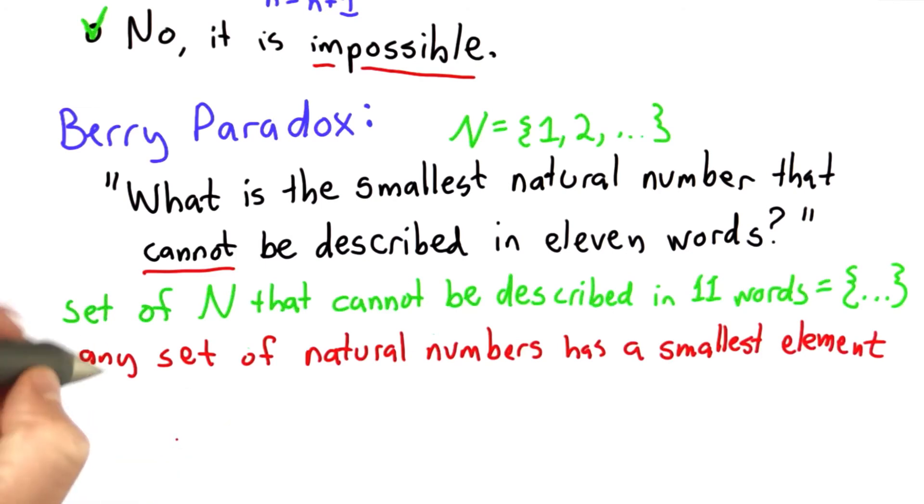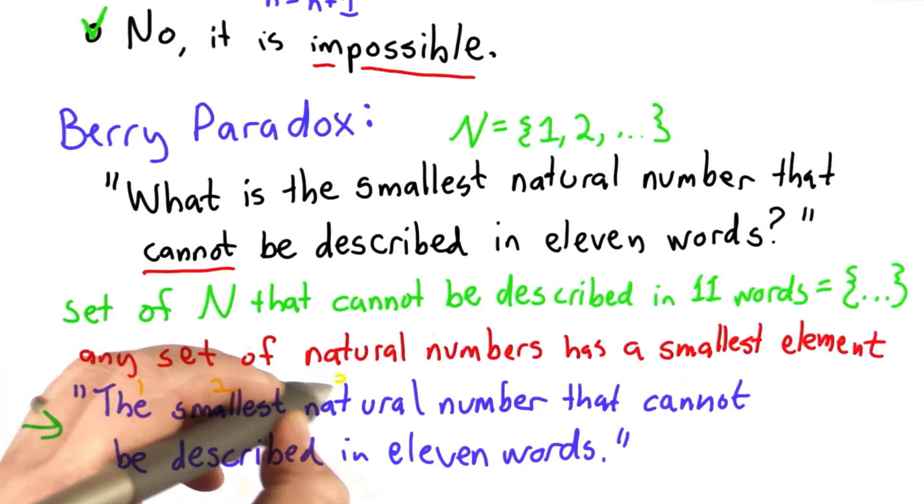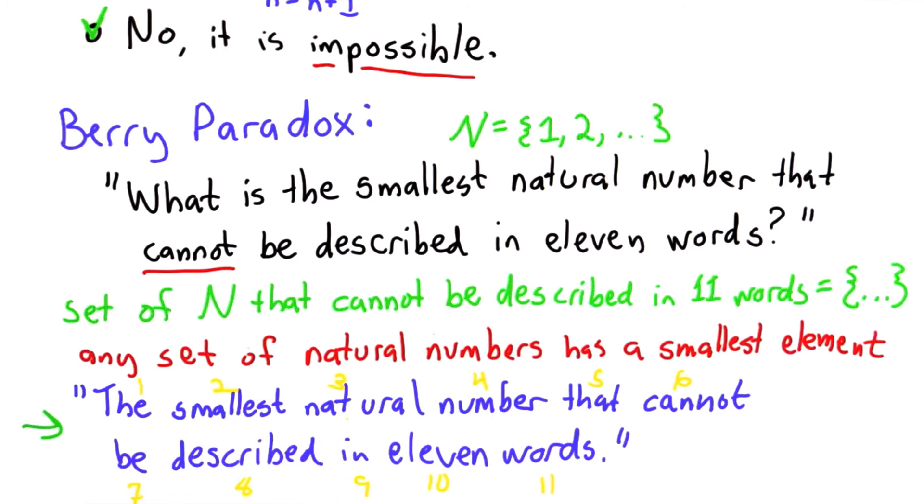And I'm going to describe it for you. Here's my description, and my description has 1, 2, 3, 10, 11 words. So I just described the smallest natural number that cannot be described in 11 words, but I've described it in 11 words.